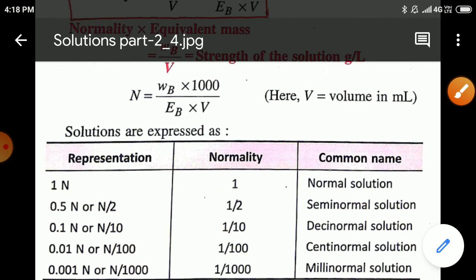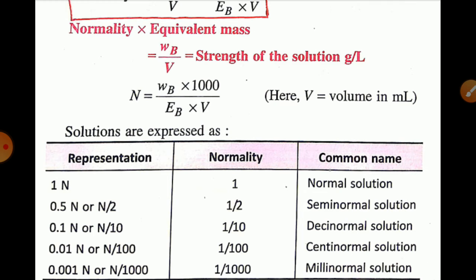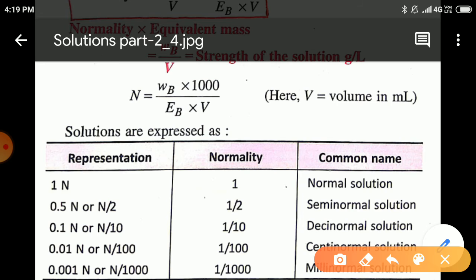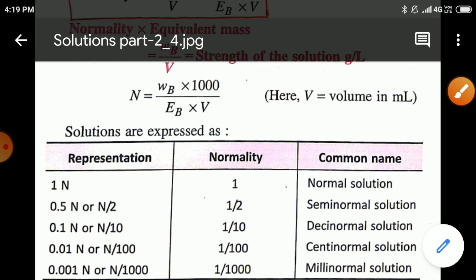From the table, we summarize normality values with common names: if normality = 1, the solution is a normal solution. If 1/2 (0.5), it is a semi-normal solution. If 1/10 (0.1), it is a deci-normal solution. If 1/100 (0.01), it is a centinormal solution. If 1/1000 (0.001), it is a milli-normal solution.